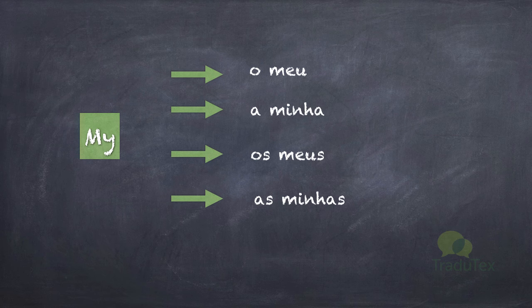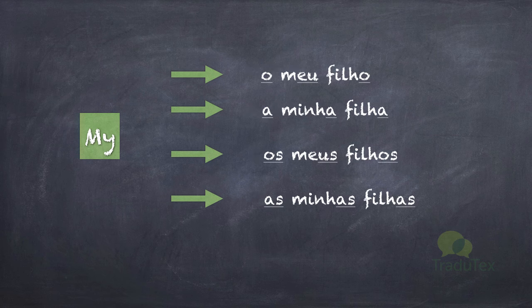So, let's have a look at the same exact examples we've seen before. As you can see, we change the possessive according to the following word. And another thing we do differently is we always have, in front of the possessive, the definite article: o, a, os, as.